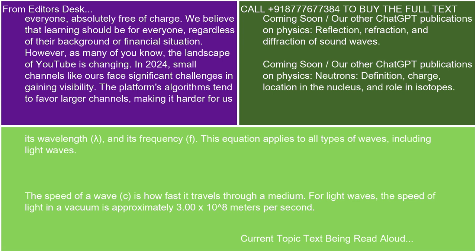The speed of a wave c is how fast it travels through a medium. For light waves, the speed of light in a vacuum is approximately 3.00 times 10 to the power of 8 meters per second.